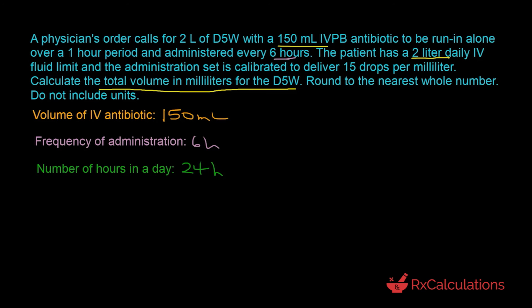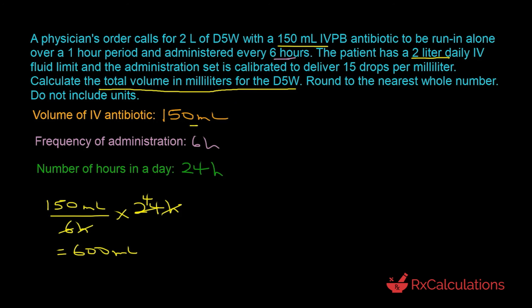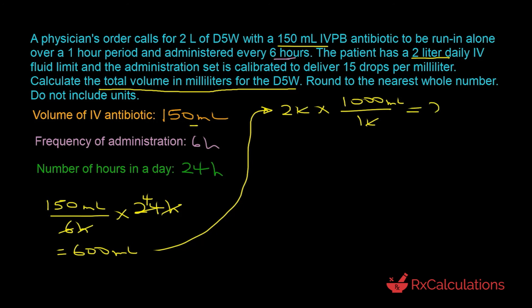We have 150 milliliters divided by 6 hours, multiplied by 24 hours. The hours cancel out; 6 goes into 24 four times, giving 600 milliliters. So the total daily volume of IV antibiotic is 600 milliliters. To find the D5W volume, we take the patient's daily fluid limit of 2 liters, convert to milliliters using 1 liter = 1,000 milliliters, giving 2,000 milliliters. Then: 2,000 milliliters − 600 milliliters = 1,400 milliliters.